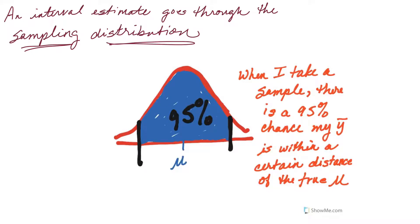So what this means is that when I take a sample — any sample, as long as it's random — there's a 95% chance that my sample mean is going to be within a certain distance of the true population mean. It's going to be in there somewhere. The way that we measure distance in a sampling distribution is with the standard error.